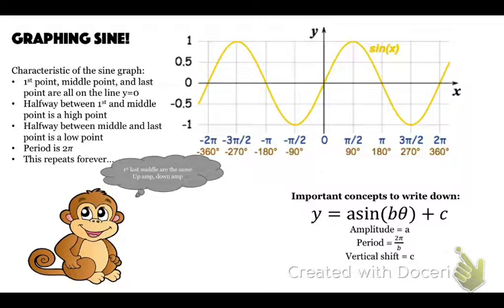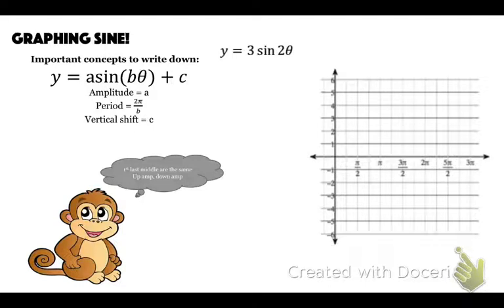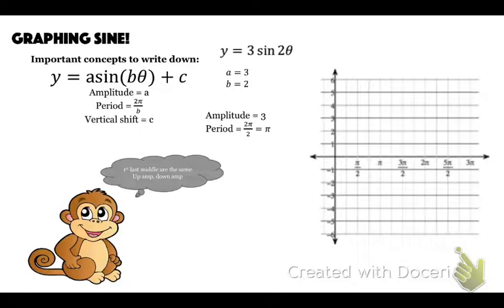Important concepts: y equals a sine of b theta plus c. The amplitude is a, the period is two pi over b, and the vertical shift is c. In this example, the a value is three and the b value is two — a is always in front of sine, b is always in front of theta. So the amplitude is three, the period is two pi over two, which simplifies to pi, and there is no vertical shift.